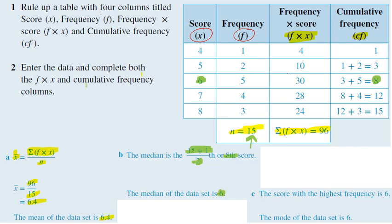And last up, the mode, which is also the easiest when it's grouped data. All we have to do is go down our frequency column, look for the largest number. In this case, it's 5. So our most occurring number is score 6.